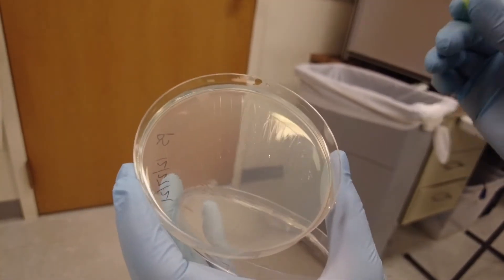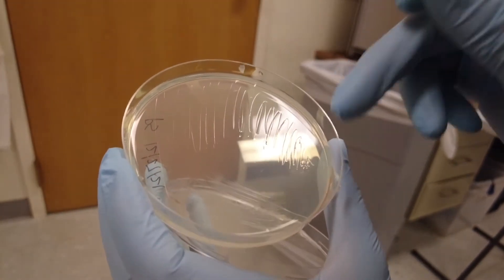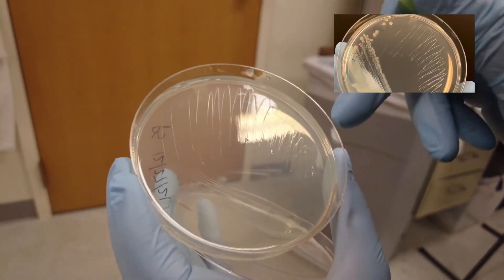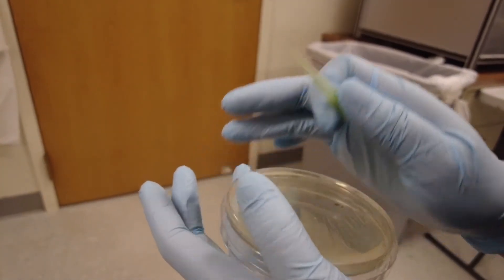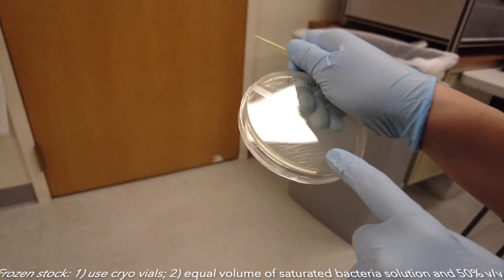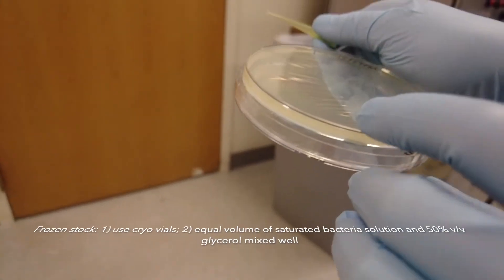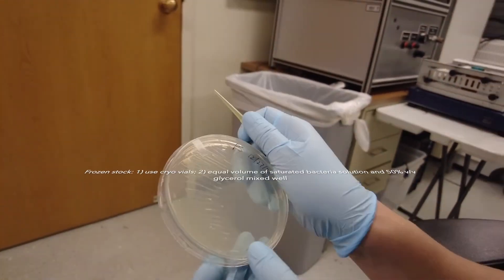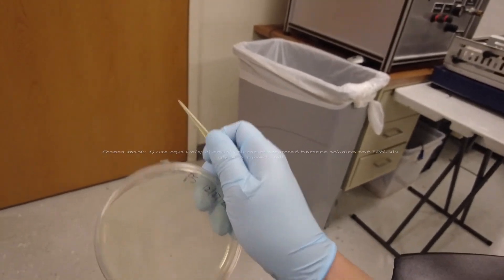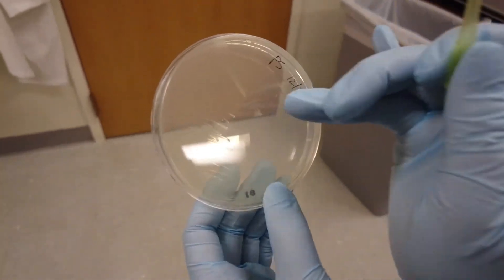What this does is that it will give you single colonies, and you can see if they grow up differently. If you ever have contaminants, you can pick up the single colony of the bacteria that you wanted and save another stock. Hopefully you'll never need to do that, but this is how you streak out for single colonies.